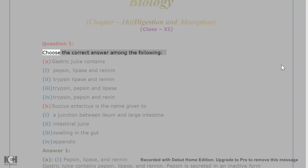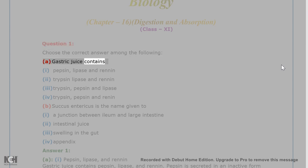Question 1. Choose the correct answer among the following. A. Gastric juice contains: 1. Pepsin, lipase, and renin.